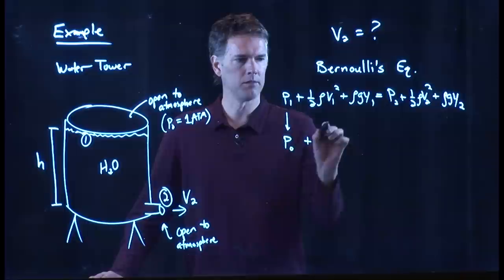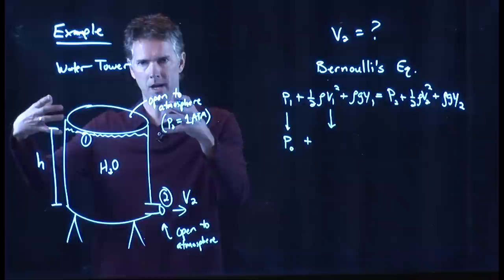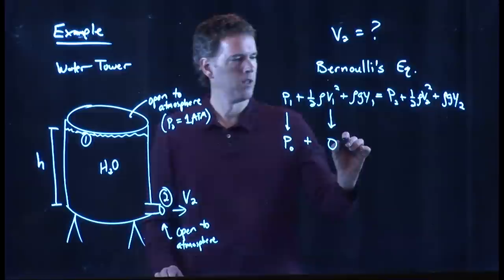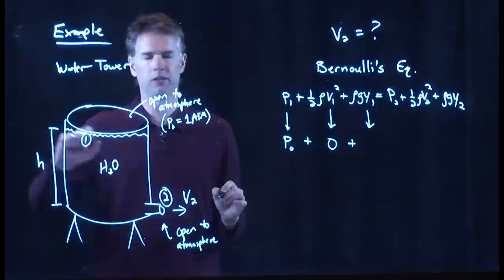What is V1 up at the top? Well, the water tower is so big and wide that the velocity of the water at the top is negligible. So that's zero. What about this guy? Well, on our scale, we said this thing is a height H, so this just becomes rho G H.